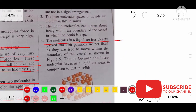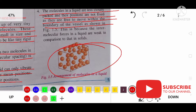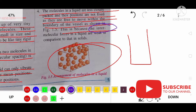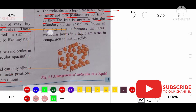The molecules in a liquid are less closely packed and their positions are not fixed — they are free to move within the boundary of the vessel. Liquids do not have a fixed shape because there is less intermolecular force of attraction and more intermolecular space.